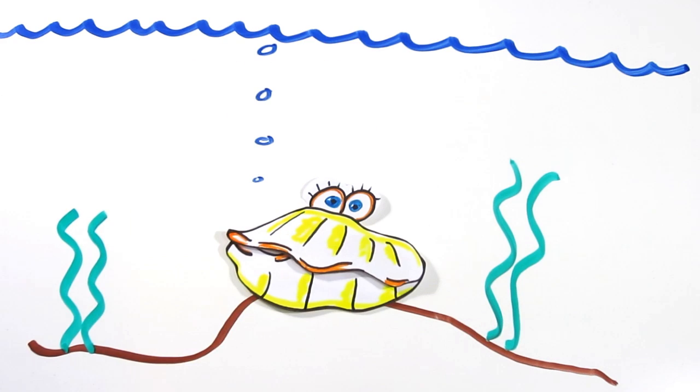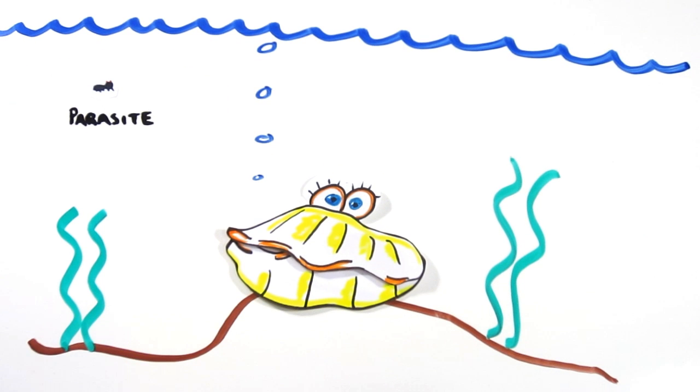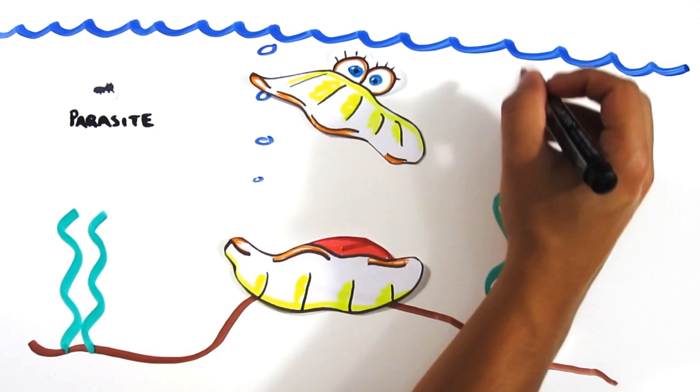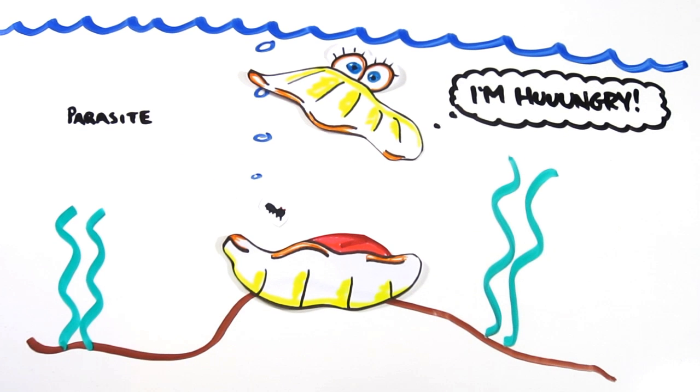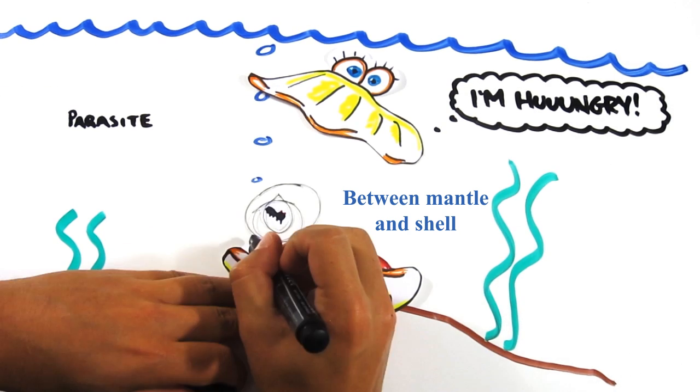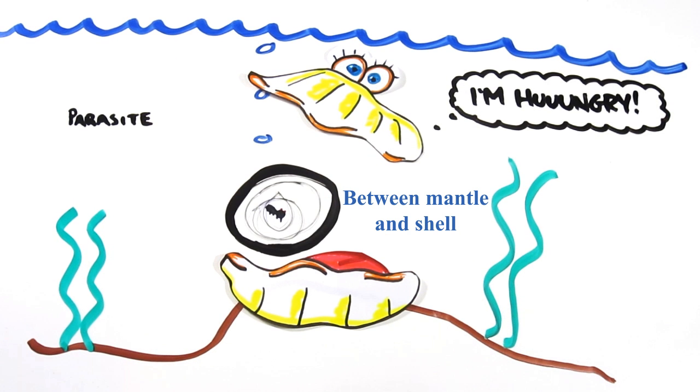Pearls are formed when a foreign substance or parasite makes its way between the shell and the mantle. This usually happens when the oyster has opened its shell for feeding. The foreign object gets into the mollusk, which then releases nacre as a protective measure, wrapping the foreign object up many times over.